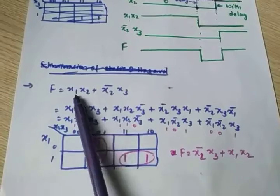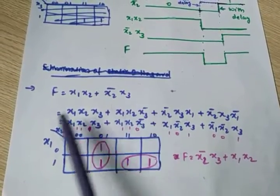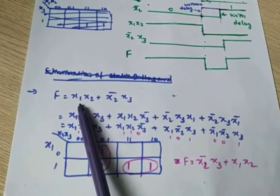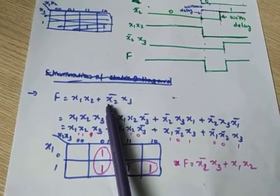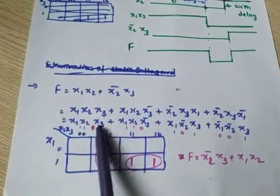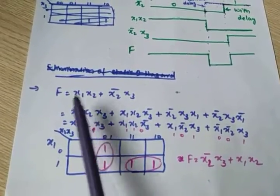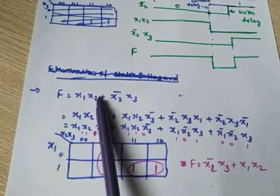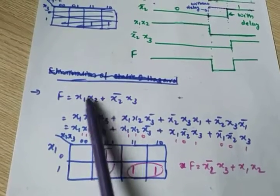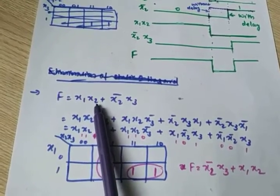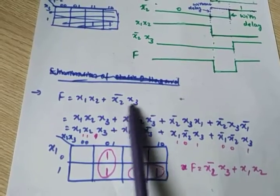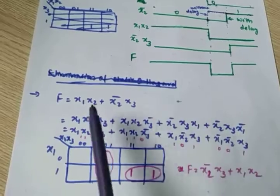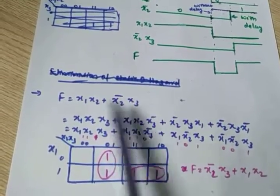Look here: x1x2 and x2_bar x3. This is sum of products form. So you have to expand it. One way — x3 is missing from the first term. You can multiply this term with (x3 + x3_bar). x1 is missing from the second term, so you can multiply that term with (x1 + x1_bar).